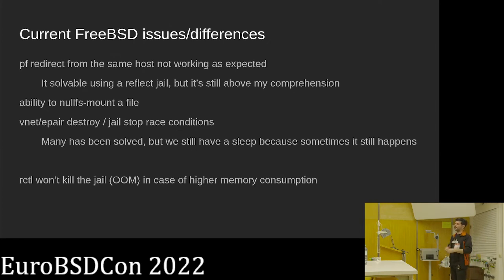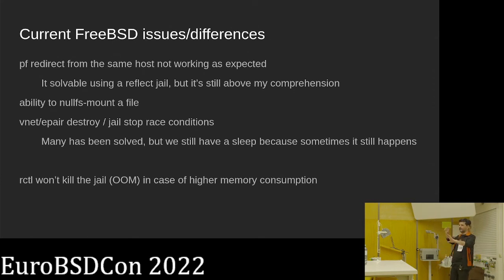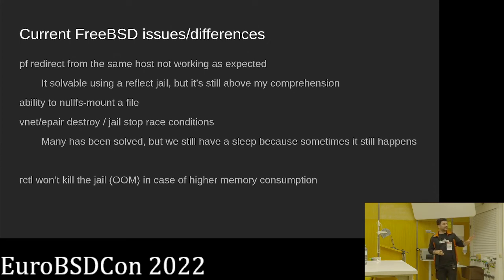There are race conditions with vnet and jails: when you stop a jail and immediately destroy the vnet epair, sometimes a race condition occurs and things crash. The easy solution is: stop the jail, wait a little bit, then destroy it. Not elegant, but it works in shell script. This kind of thing is not easy.